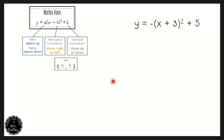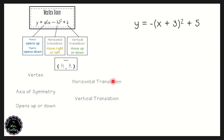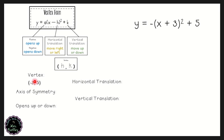For y equals negative times the quantity x plus three, squared, plus five: recall that vertex form uses x minus h, so x plus three means x minus negative three, making h equal to negative three and k equal to positive five. The vertex is at (-3, 5). The axis of symmetry is x equals negative three. The a value is negative one, so this parabola opens down. To plot the vertex at (-3, 5), we shift the parent function to the left three and up five.